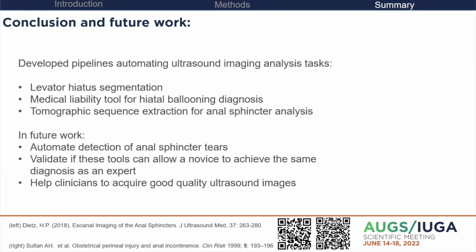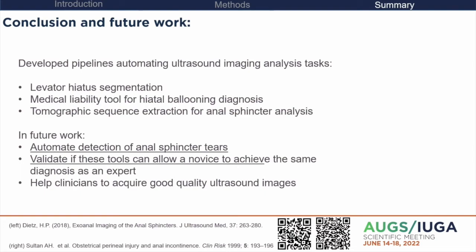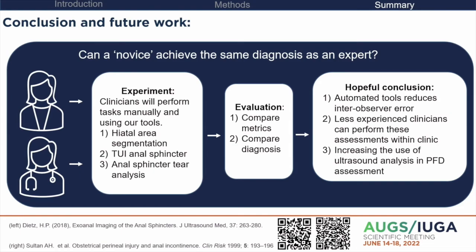One area we want to look at is the detection of anal sphincter tearing — we will create an algorithm that measures tears in TUI sequences automatically, following the protocol by Dietz, and potentially use this to suggest a grade of anal sphincter injury following the protocol by Sultan. We then want to see if these tools can actually reduce error and reduce the level of expertise required to perform tasks in the clinic, by comparing a novice against an expert performing several tasks both manually and automatically with our algorithm, comparing metrics and diagnoses. The goal is that less experienced clinicians may be able to perform these tasks, ultimately meaning more patients can be imaged.